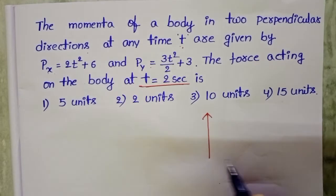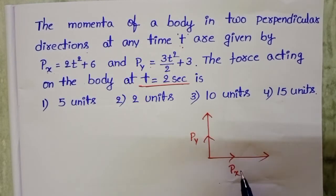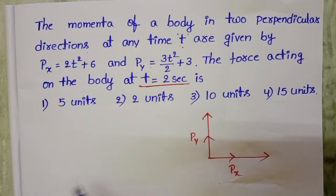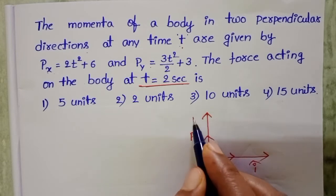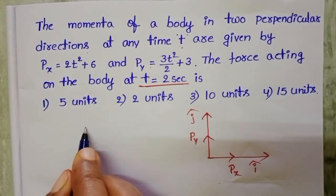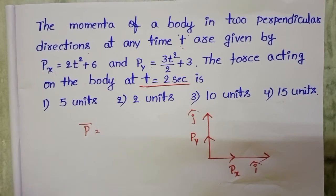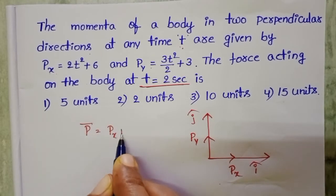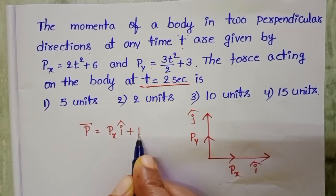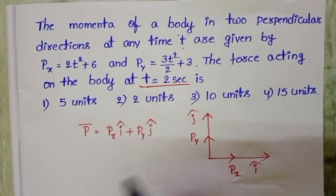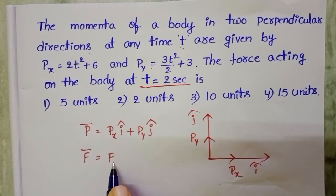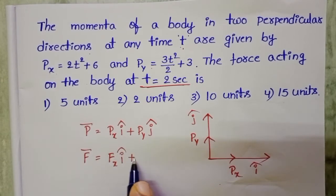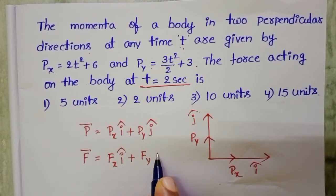Momentum is a vector quantity. Here, the momentum of the body is acting along the x direction and y direction. The unit vector along x direction is i-cap and along y direction is j-cap. The vector representation of momentum P-bar is equals to Px i-cap plus Py j-cap.